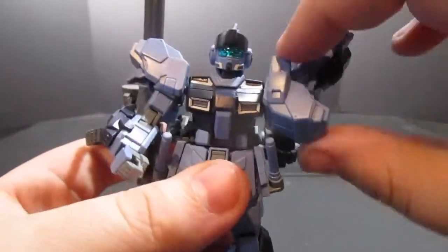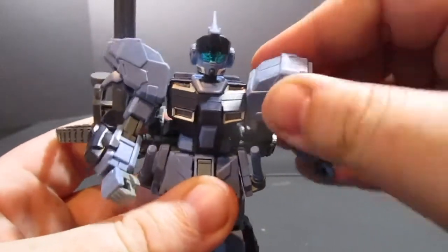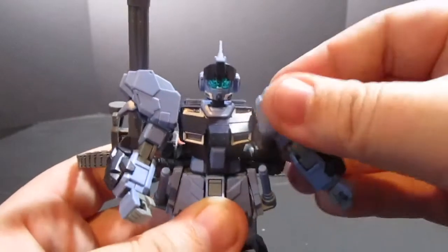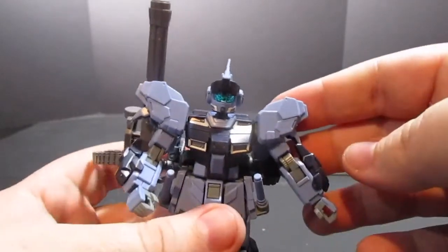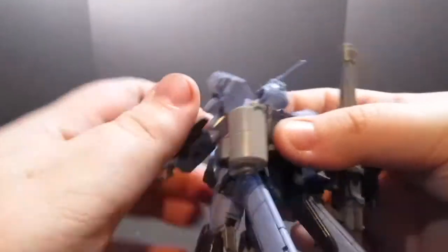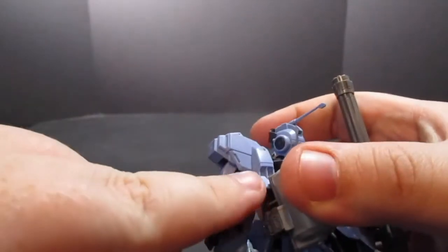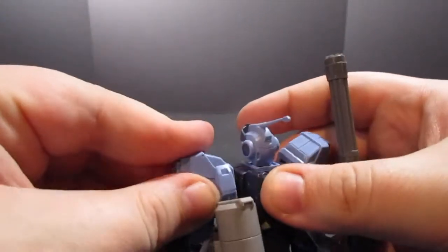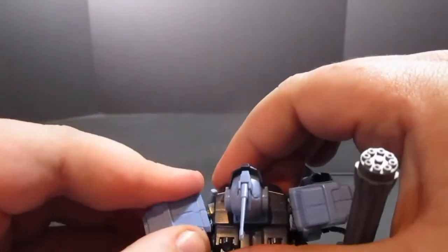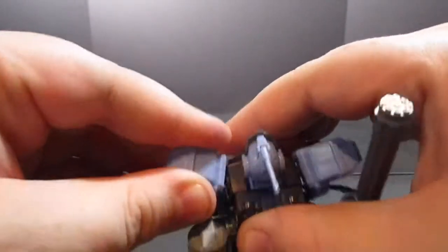Putting the arms on finally, and watch out for that thruster there on the back of the shoulder because that will catch on just about everything when you try to rotate it around. It's honestly quite annoying. You can see how that lip right there will catch onto the can for the gatling gun. Your shoulders will move in and out.